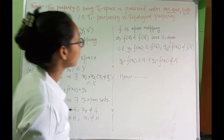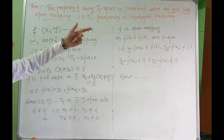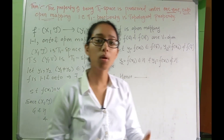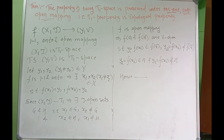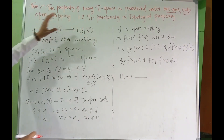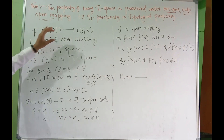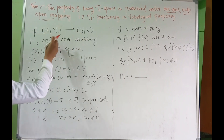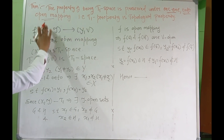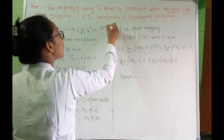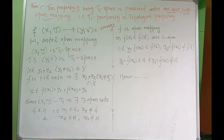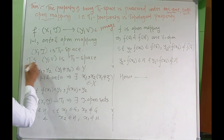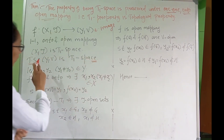The T1 property is a topological property, meaning it is preserved under a one-to-one, onto, open mapping. Let f be a function from X, T to Y, V which is one-to-one, onto, and an open mapping. We want to show that if X, T is T1, then Y, V is also T1.